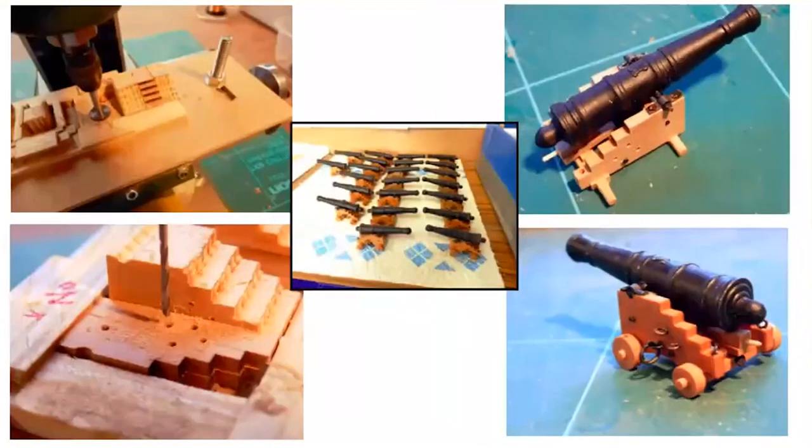In making the carriages for the guns, I did this with the use of jigs through milling and turning and drilling. I produced a production line. These slides show just some of that process. Top left is the jig in action for making the sides of the carriages. Bottom left shows these sides of the carriages having holes drilled in them ready for their ironwork fittings.